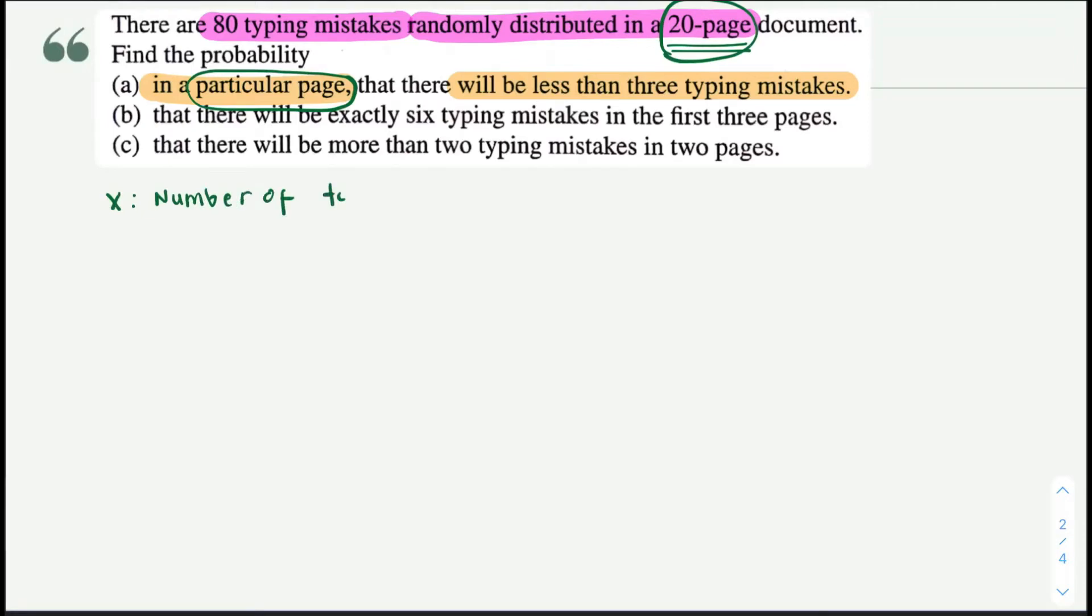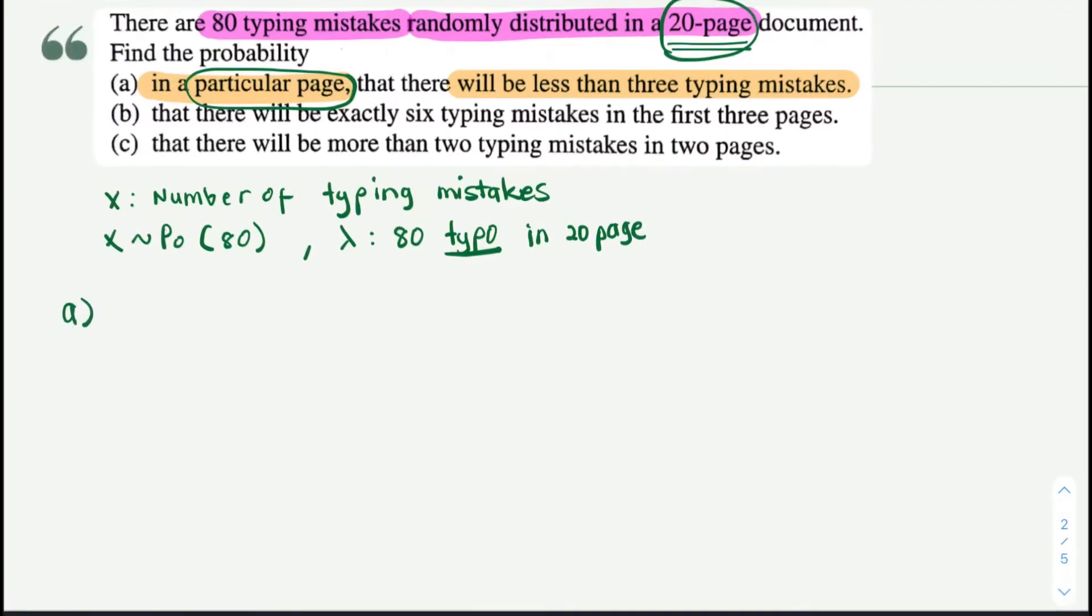So what you have is that X is a random variable, number of typing mistakes, and X is a Poisson distribution with the lambda of 80. Okay, now 80 is for typing mistakes, I just put typo, in 20 page document. So for part a, when you have to change the lambda, you need to change your lambda into per unit first.